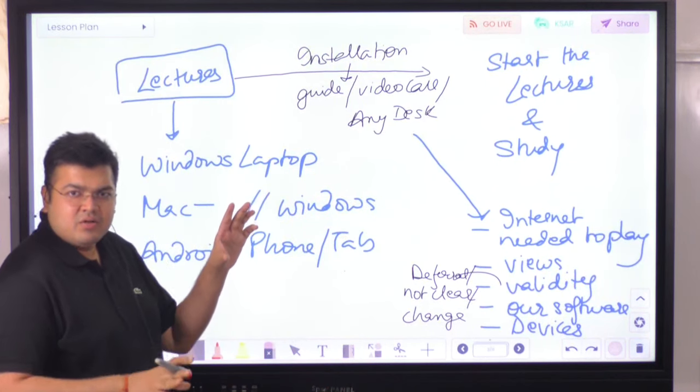If you defer the exam, fail, or don't attempt it, contact the technical team or coordinator with proof of deferral — such as the institute's deferral confirmation or your result — and they will extend the validity. There's no fixed two-year or three-year limit; validity extends until you pass the exam. If curriculum changes occur or new chapters are added, those updates are provided via Google Drive and the app, so a second courier is not required.